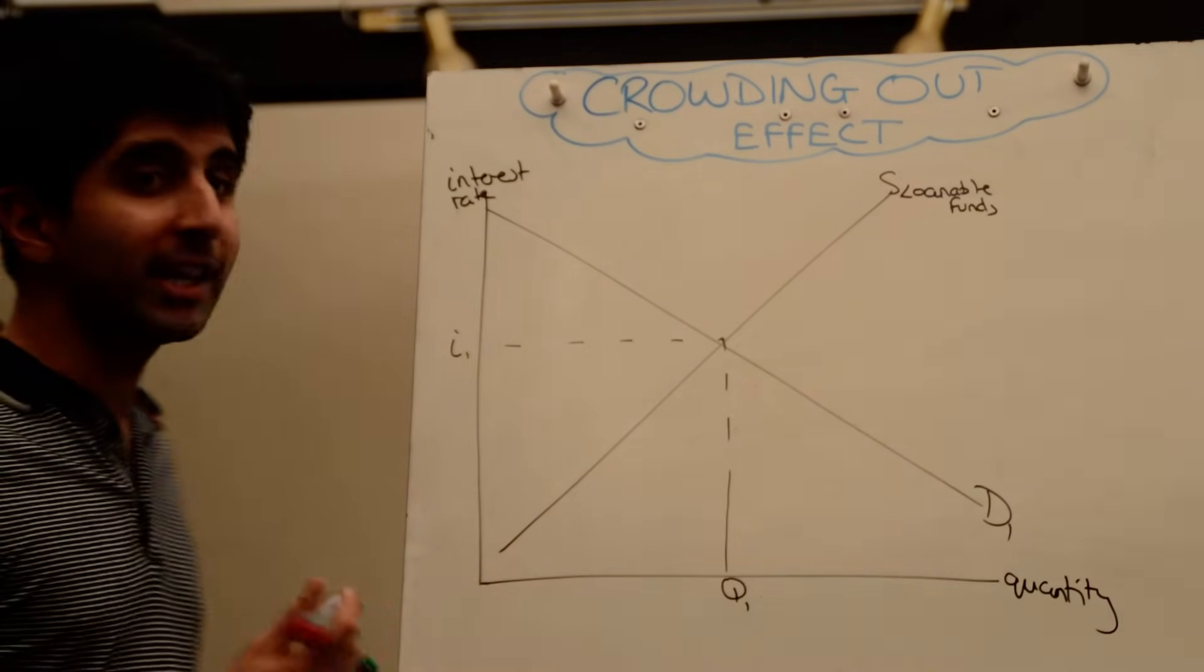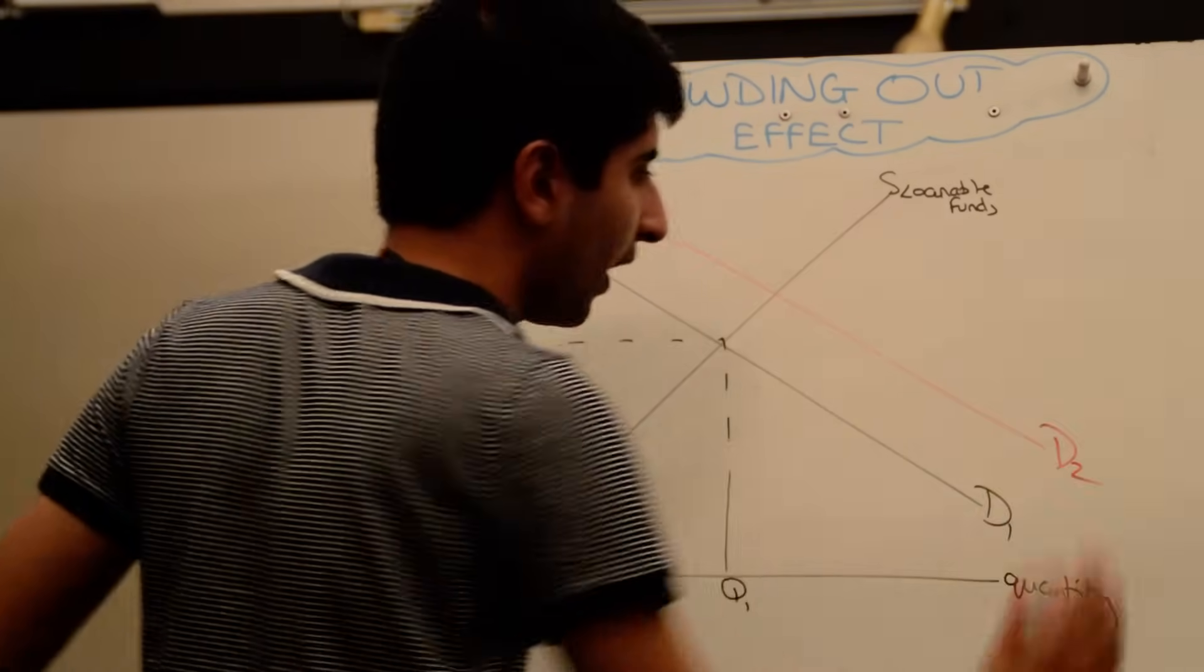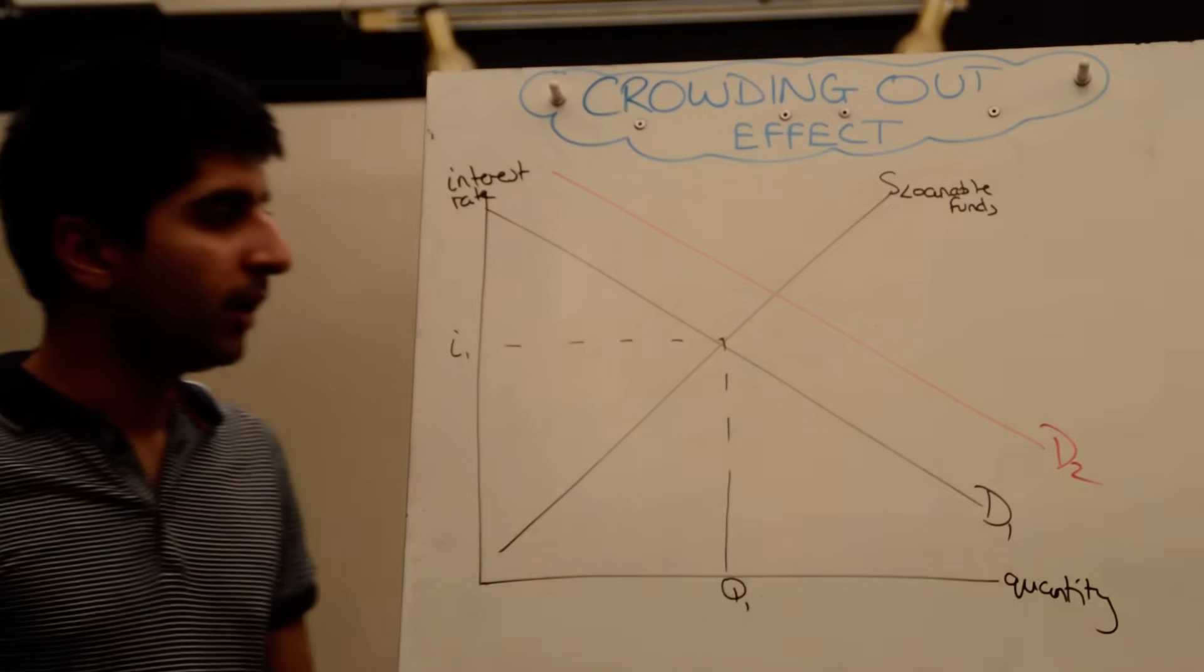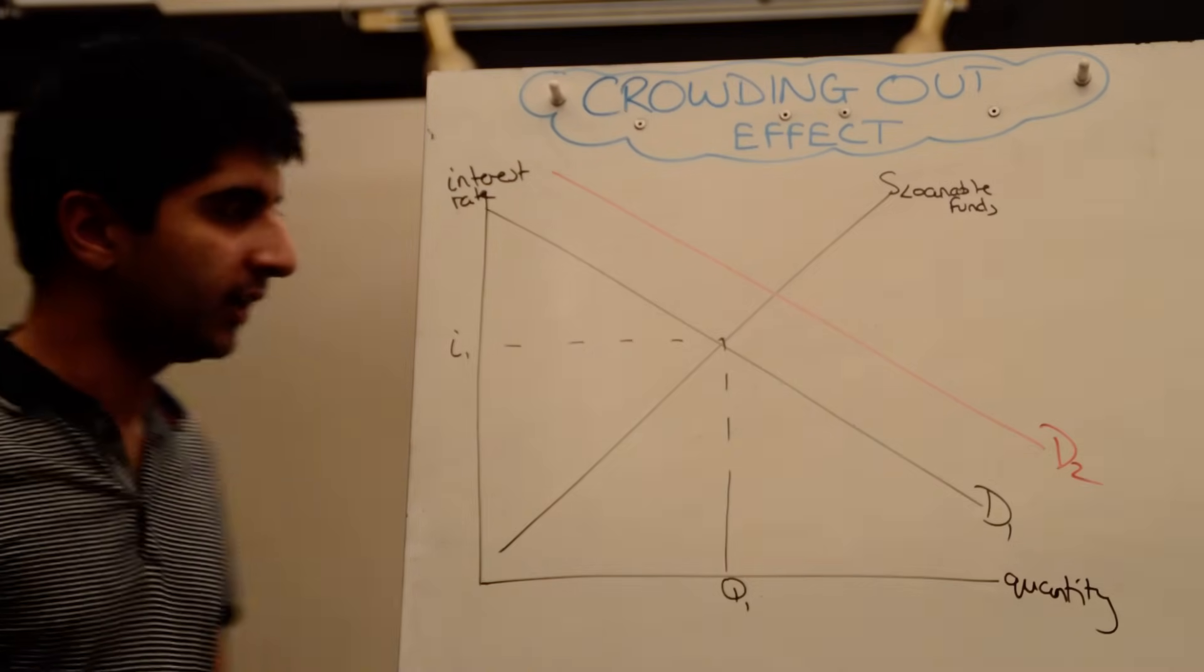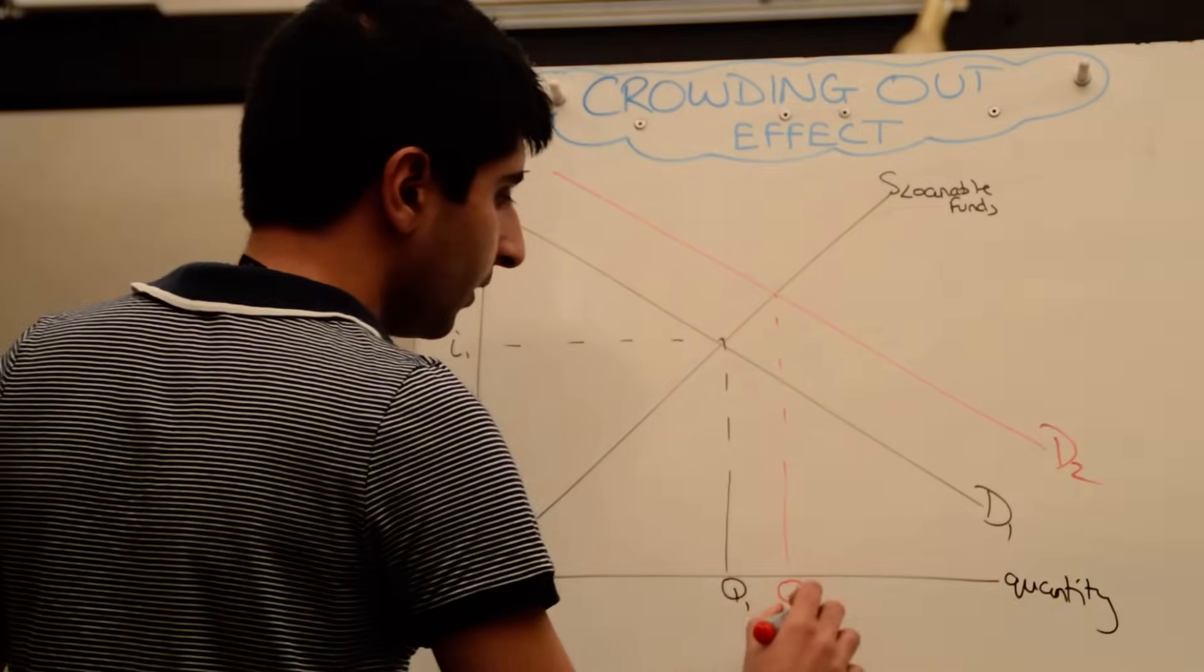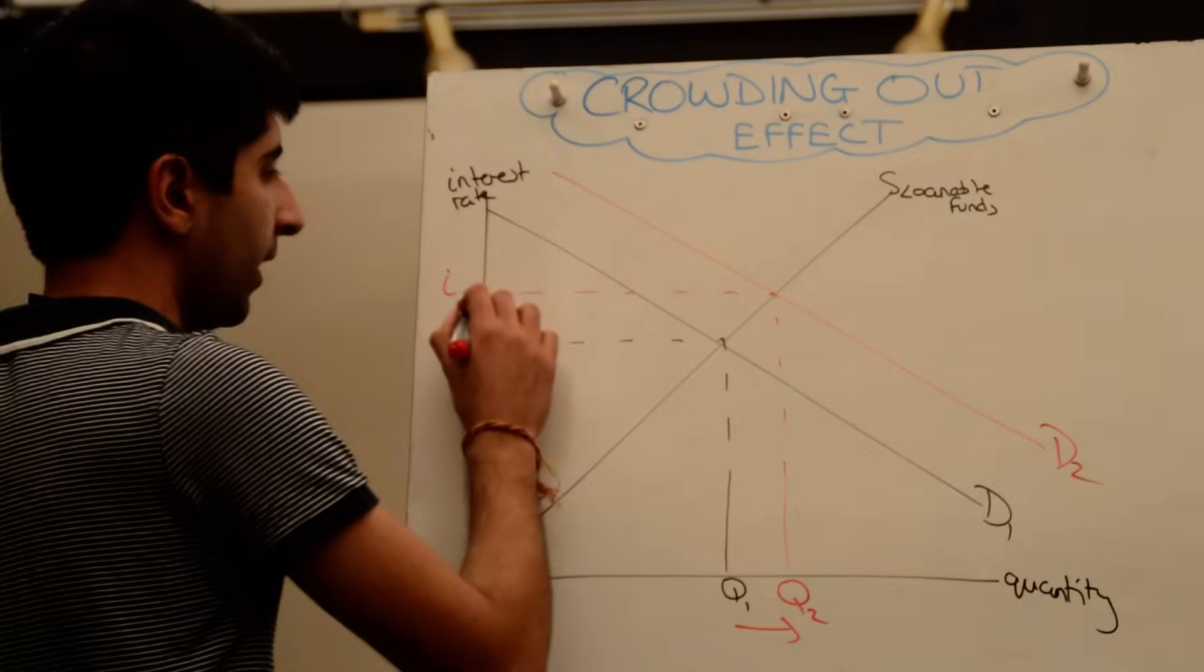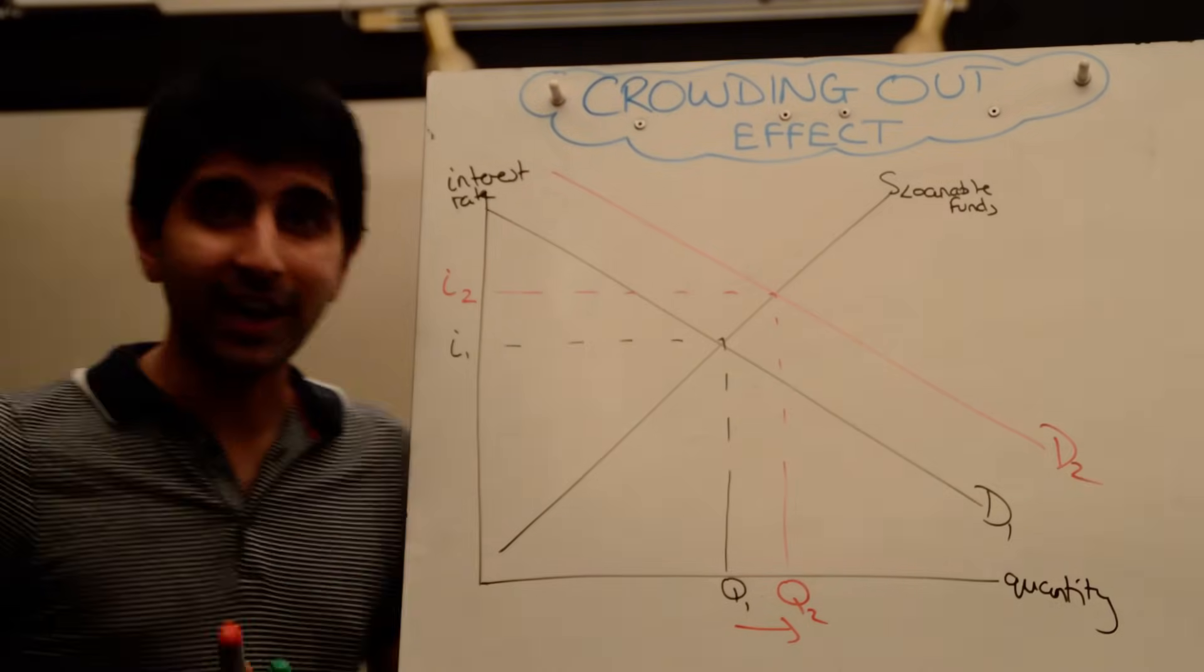This shifts the demand curve for loanable funds to the right from D1 to D2. More pressure is put on these savings that will be transferred into loans, increasing the demand for them, which increases quantity from Q1 to Q2. But more importantly, it raises the market interest rates from I1 to I2.